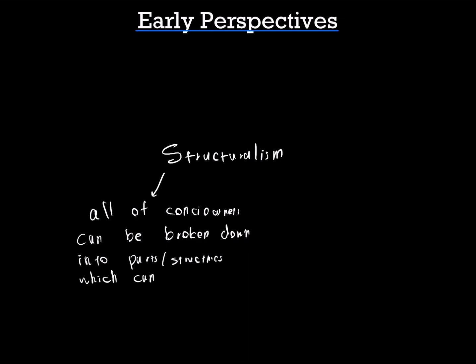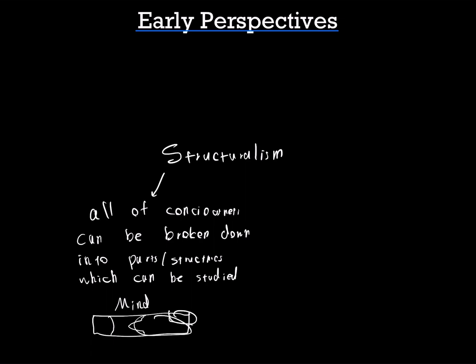It's kind of like anatomy where you think about specific structures. So if you imagine this thing being the mind, it would say that there's this part, there's that part, and there's a separation here — one part, another part, and so on. And if you understand all of those parts or structures, you would understand the entire mind.